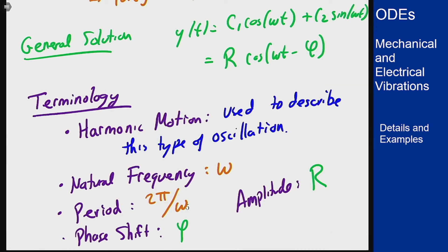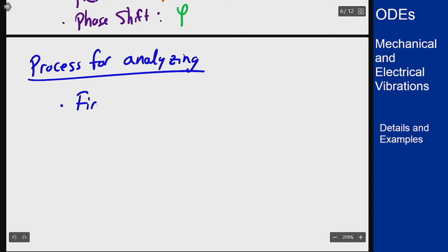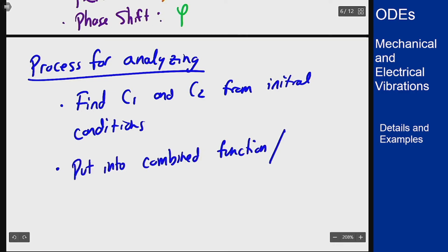The general approach to these sorts of problems will be to, if we're in this case, figure out c1 and c2 using the initial condition and then go to find r to work it out from there. So we'd start by looking for these constants and then put this into the combined function form, or mainly just find r because that's more interesting as opposed to what the phi actually is for the phase shift. And for this case we actually find it directly: it's root c1 squared plus c2 squared is what r ends up having to be to make this work.